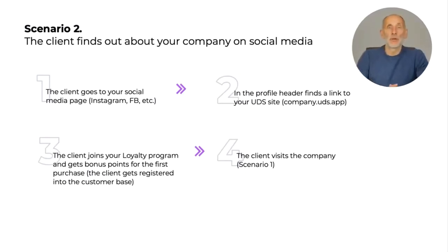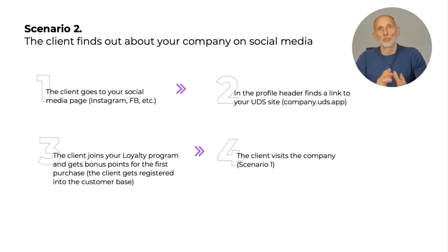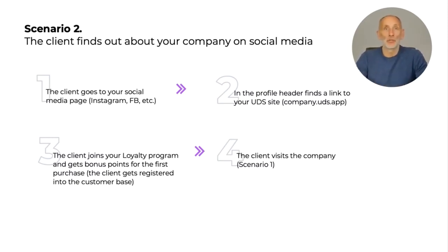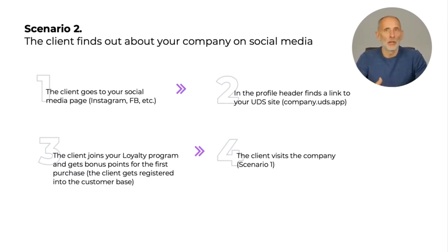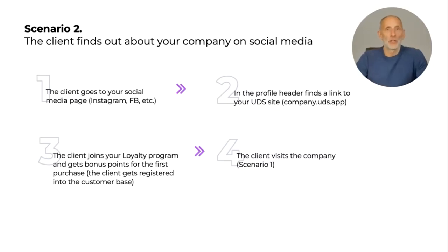The next scenario is when your customer finds your company on social media. She goes to your social media profile and finds the link to your UDS website. Remember, you can create your unique website name in the UDS admin dashboard. The customer can do shopping at your website or just join your loyalty program and then come to visit your place physically, from where she will go through the previous scenario.